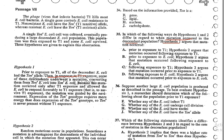We can eliminate A and B because they talk about prior to exposure. Looking at option D, it mentions following exposure to E. coli, which is completely wrong since the exposure was to T1. So even without looking at the second part of option D, we can confirm that option C is correct.